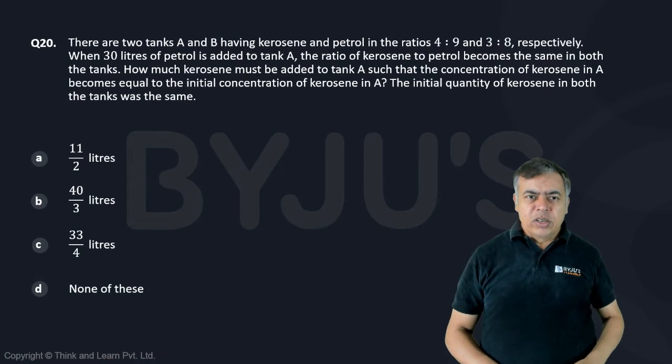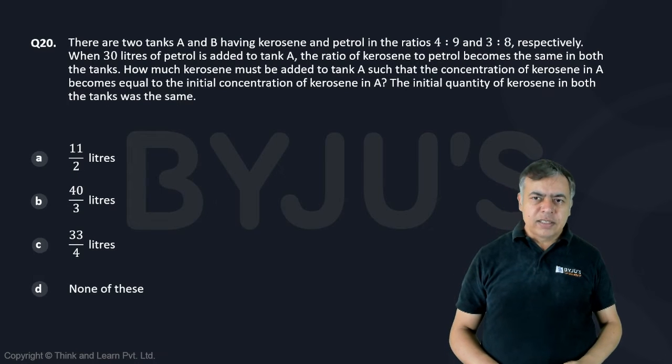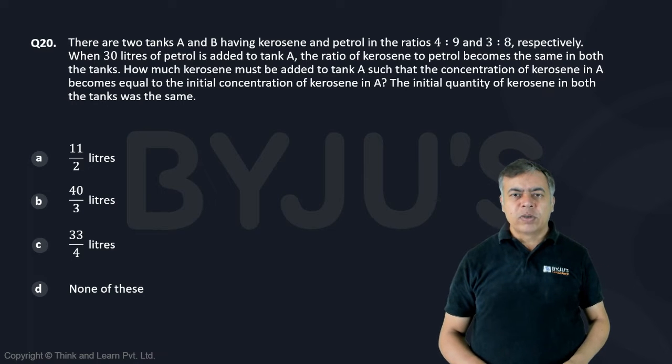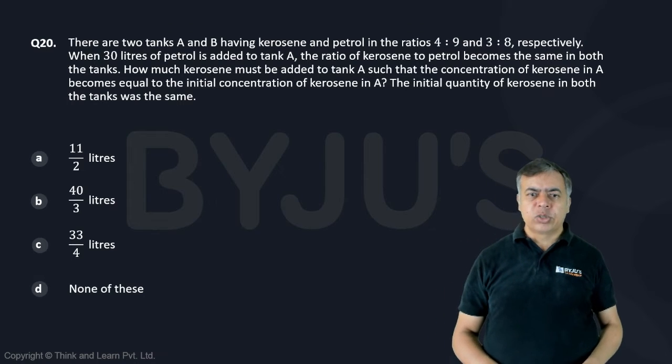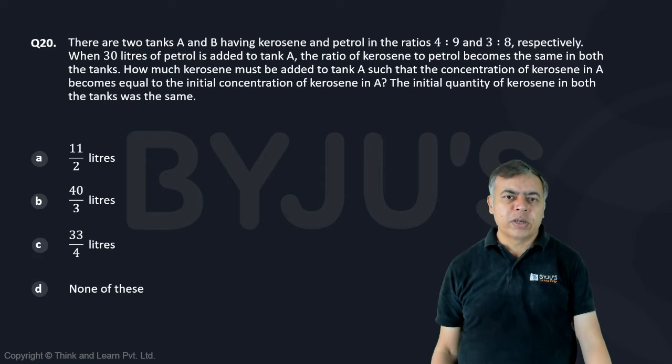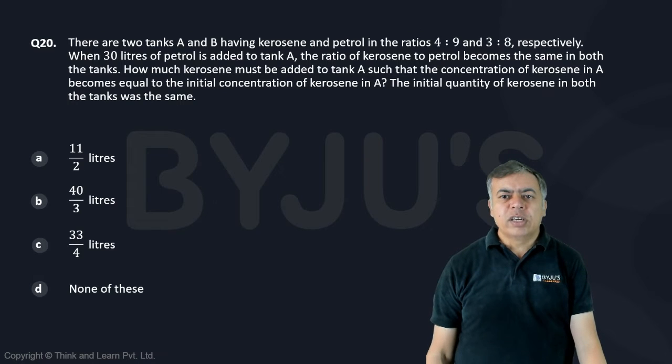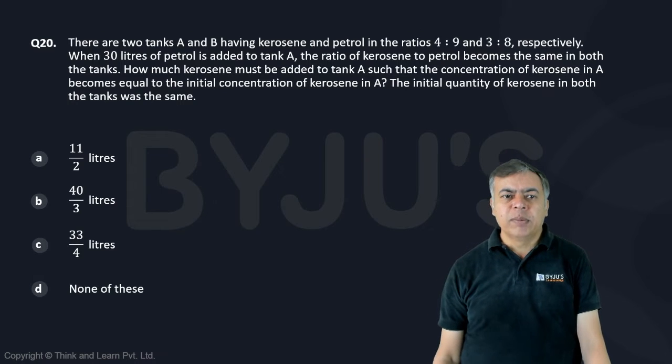Okay, again a question on tanks. Let us see what is the question. I think mixture and solutions. There are two tanks A and B having kerosene and petrol in the ratio 4 is to 9 and 3 is to 8 respectively. When 30 litre of petrol is added to tank A, the ratio of kerosene to petrol becomes the same in both the tanks.